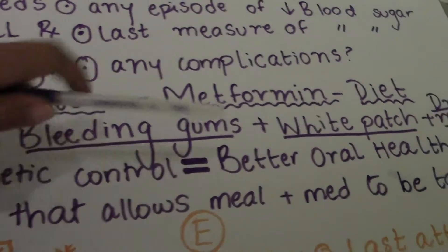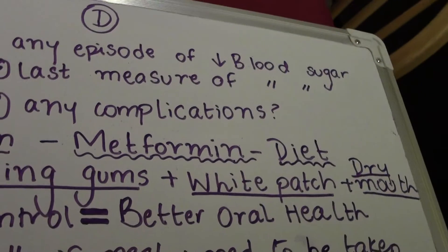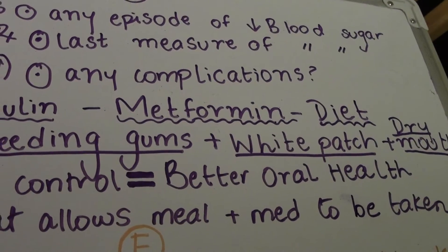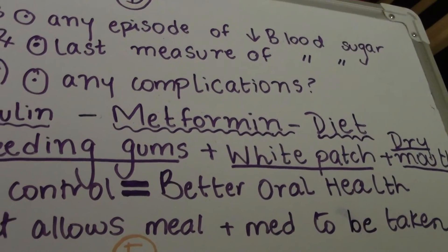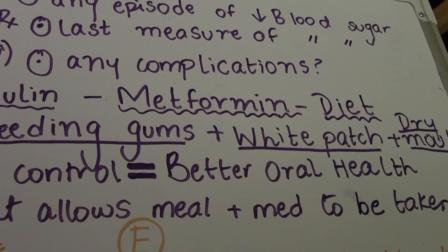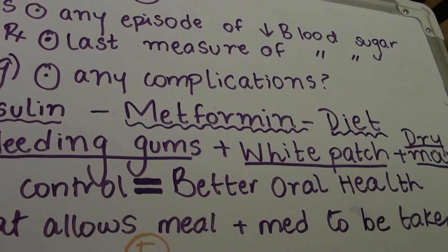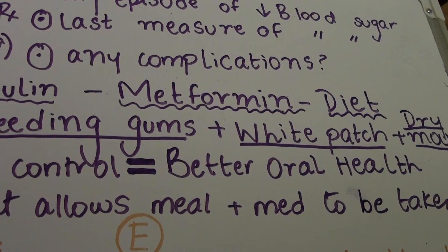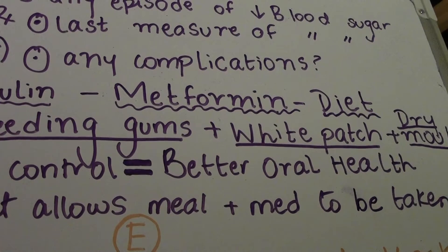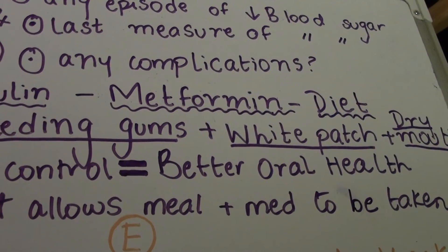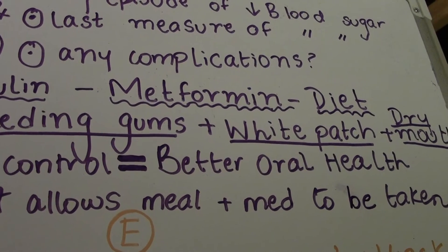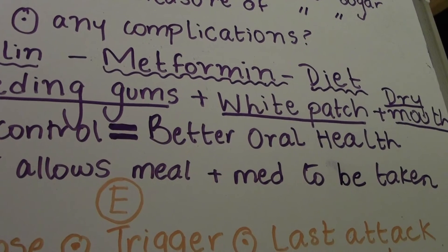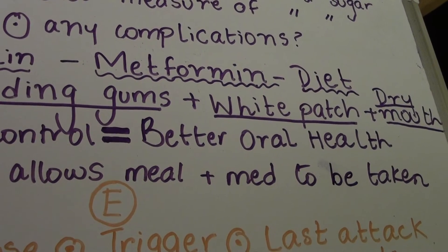The white patch could be seen for two reasons. The first is candidosis, which may be seen in the mouth of a diabetic. The white patch could also be lichenoid, caused by metformin. The mouth could also be dry as a side effect of metformin.